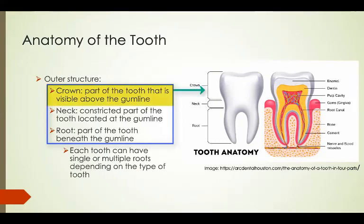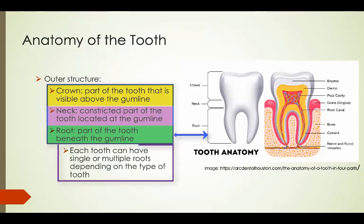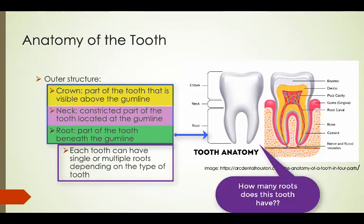When you look at the outer layer of the tooth, it is divided into three main parts. The crown is the part of the tooth that is visible above the gum line. The neck is the constricted part of the tooth located at the gum line. The root is the part of the tooth we can't see because it is beneath the gum line. Depending on what type of tooth — whether it's an incisor, a canine, a premolar, or a molar — each could have a single root or multiple roots.